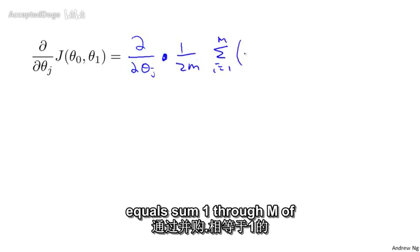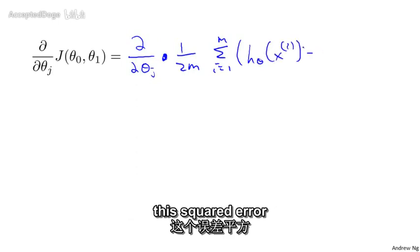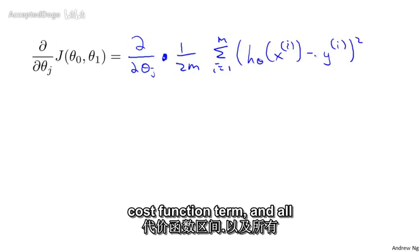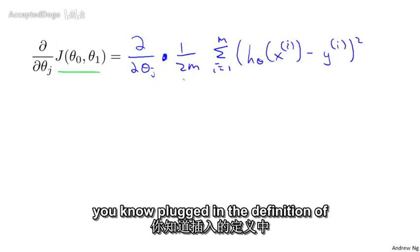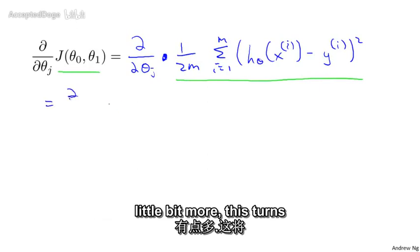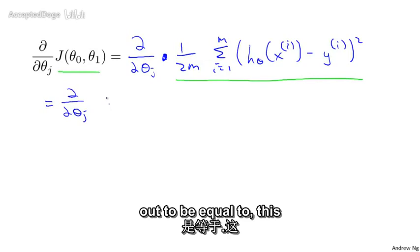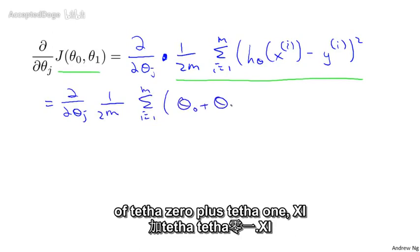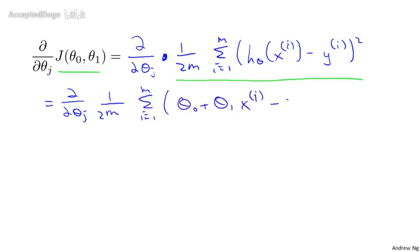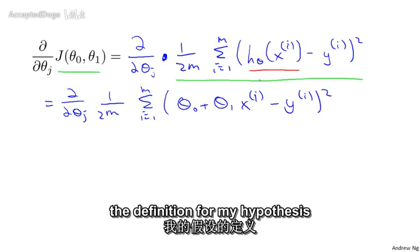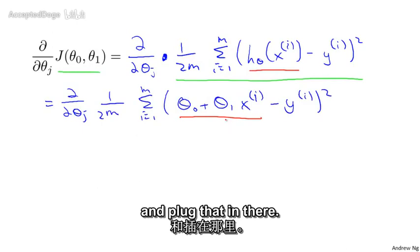It's the sum from i equals one through m of this squared error cost function term. All I did here was plug in the definition of the cost function. And simplifying a little bit more, this turns out to be equal to the sum from i equals one through m of theta zero plus theta one x_i minus y_i, squared. All I did there was take the definition for my hypothesis and plug it in.